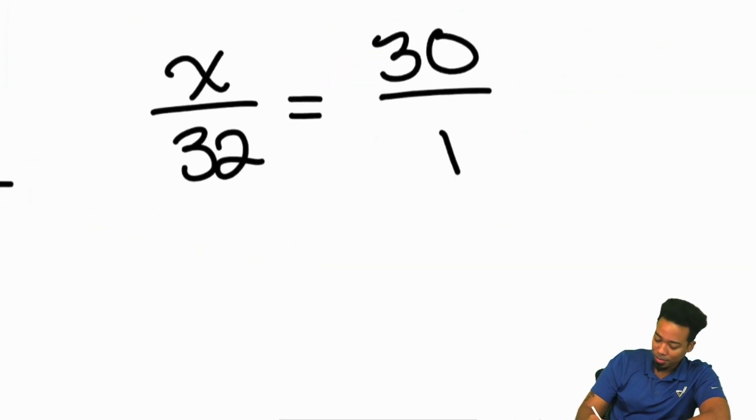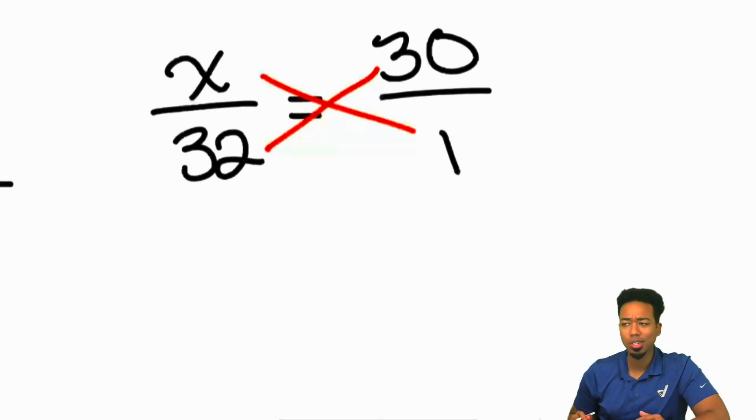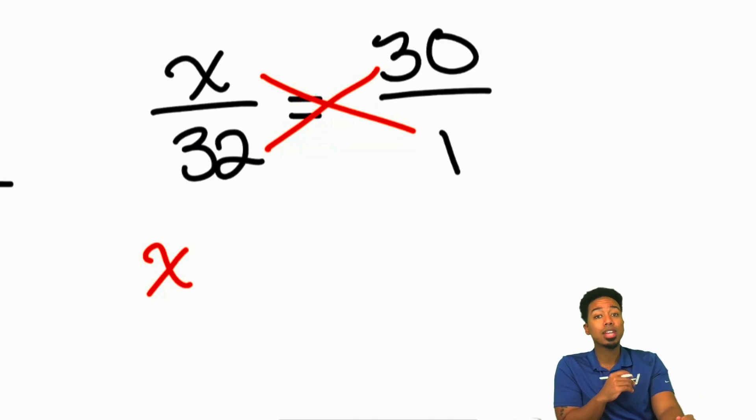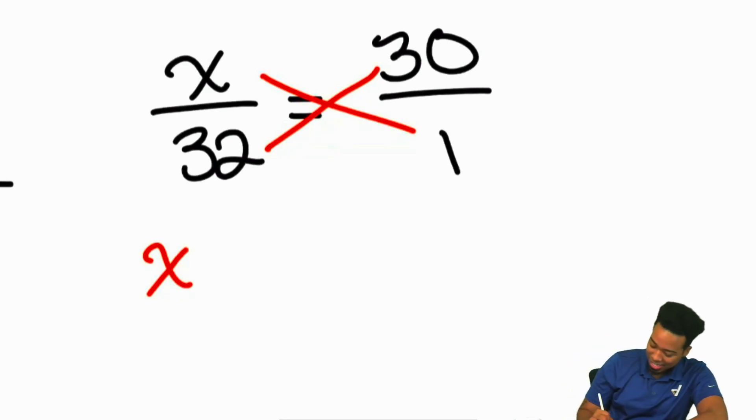So now, all we have to do, cross multiply here, x times 1, wow, hardest question of the day, that'll be x. 32 times 30, don't worry, that's actually not that hard. You can do 32 times 3, then tack the 0 on at the end. 32 times 3, that's 96. Bring the 0 in at the end, that's 960. Not that bad, right? Not that bad, as long as we aim to just use and apply these basic strategies.